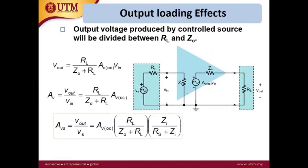At the output, if you connect RL, you can use the voltage divider to get Vout — this derivation was done in the previous part. If Av is defined as Vout/Vin you get one equation; if Av is defined as Vout/Vs you get another. The total gain Avs considers both the voltage drop at the output and the voltage drop at the input.